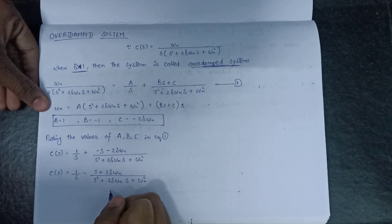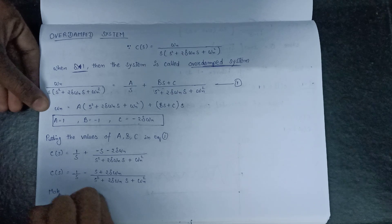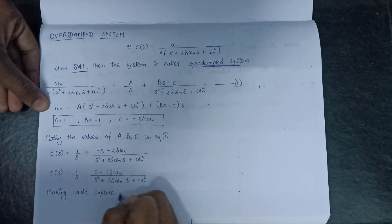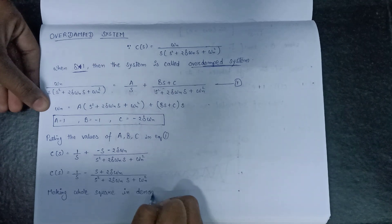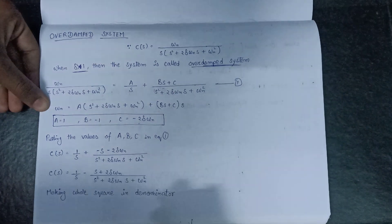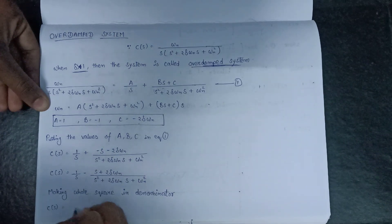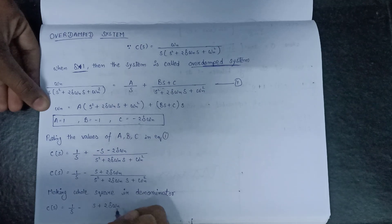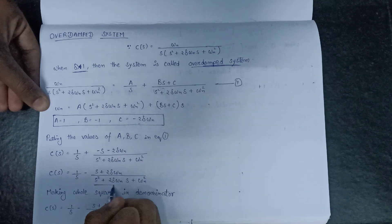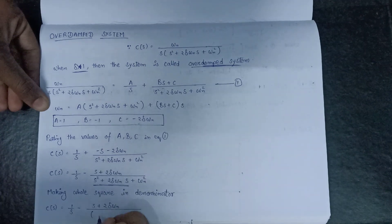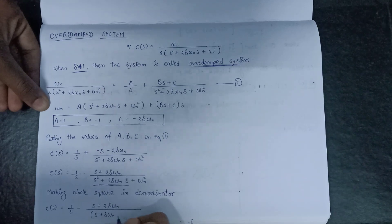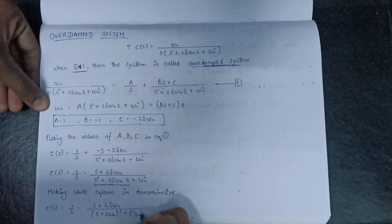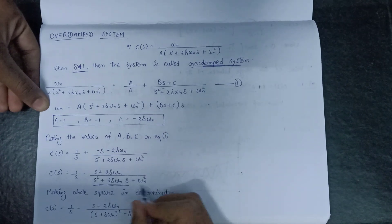Then we have to set up a whole square in the denominator. Making a whole square in the denominator, C(s) equals 1 over s minus (s plus 2*delta*omega_n) over [(s plus delta*omega_n) squared minus delta squared*omega_n squared plus omega_n squared].